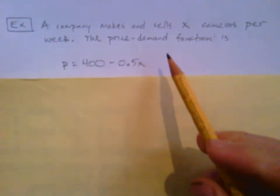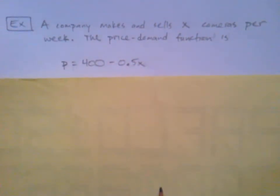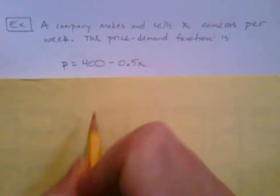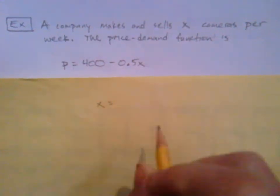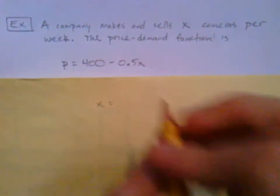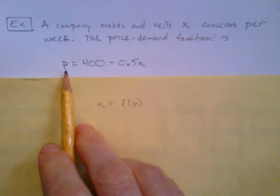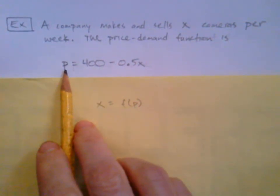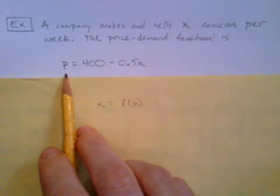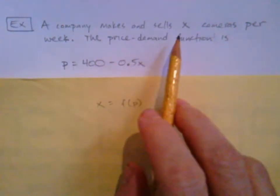We dealt with price demand functions back with elasticity of demand. Although when we did elasticity of demand, it was always X equals something with P, like F of P is what we called it. Here we've got it reversed. We've got it solved for P. It's still a price demand function, but here we're switching things up.